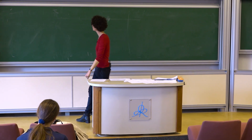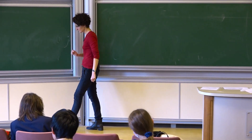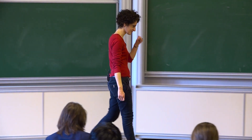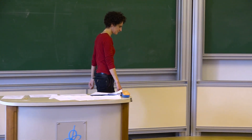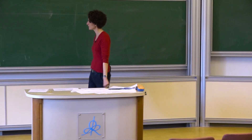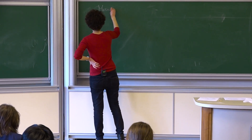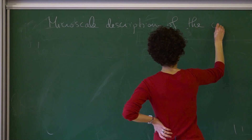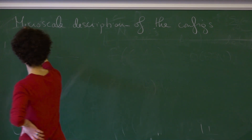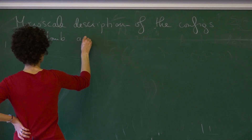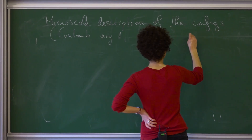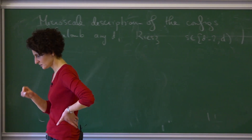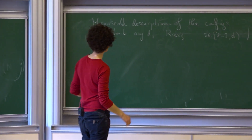To finish, I want to circle back to the beginning of the lectures where we talked about crystallization and the Cohn-Kumar conjectures in dimensions 8 and 24. This will allow us to give a description of the configuration at the microscopic scale — a micro-scale description of the configurations. This works for all Coulomb in any dimension, but also for Riesz in the interval (D-2, D). There have been improvements in terms of the description.